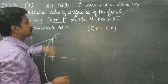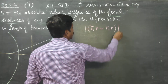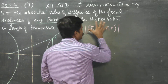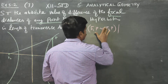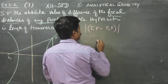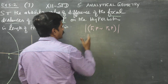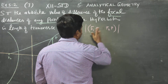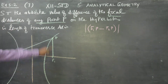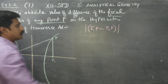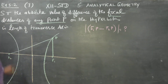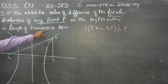What is the meaning of absolute value? If a negative answer comes, it will be positive — that's all. We want the actual difference. So F1P minus F2P is the answer we are looking for.